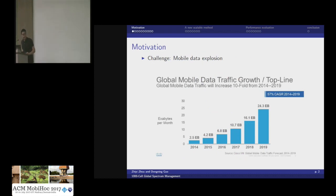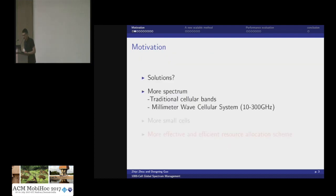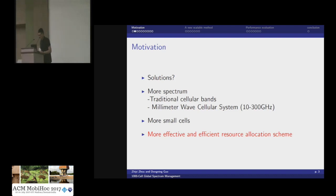The motivation of this work is to deal with the challenge of mobile data traffic explosion. Mobile data traffic is increasing exponentially every year. To deal with that, one way is to explore more spectrum including traditional cellular bands as well as millimeter wave bands. Another way is to deploy more cells to improve spectral efficiency and coverage. The third way is to design more effective resource allocation schemes, including spectrum allocation, user association, scheduling, and power allocation. Our main focus is on spectrum allocation and user association.